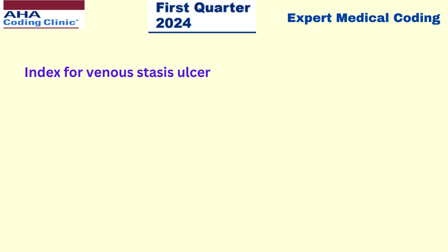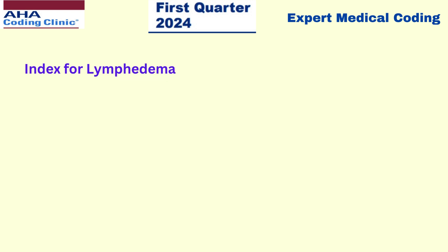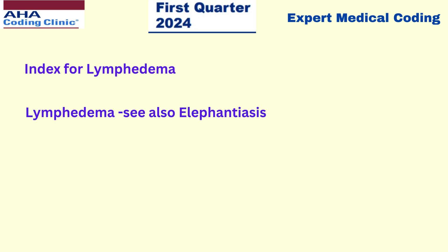Now go to the index and search for venous stasis. Go to the main term stasis, under the sub-term ulcer, and without varicose veins — because there is no mention of varicose veins in this scenario. Without varicose veins, it will lead you to the code I87.2. For lymphedema, go with the main term lymphedema. It will lead you to 'see also elephantiasis', and as per that instruction, go to elephantiasis — it will lead you to the code I89.0.